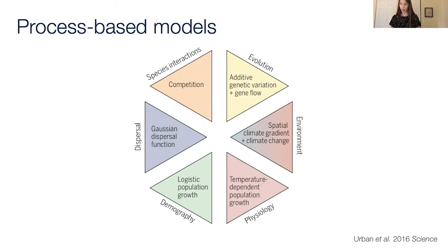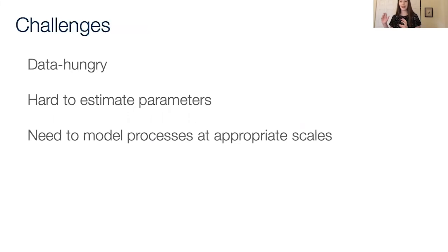The path forward that's been proposed is using process-based models that explicitly model these mechanisms connecting species to their environment. The model I'm going to talk about addresses four of these six proposed in this paper. We'll talk about dispersal, demography, physiology, and environment. It does not yet have species interactions or evolution. And there's a reason that these models haven't been widely adopted yet. Process-based models are really data hungry compared to an ecological niche model. They require good estimates of parameters that can be very hard to estimate, about growth and dispersal that we don't know for most species. And you need to model these processes at appropriate scales, which is really a big challenge in going from a population model to a spatial population model.